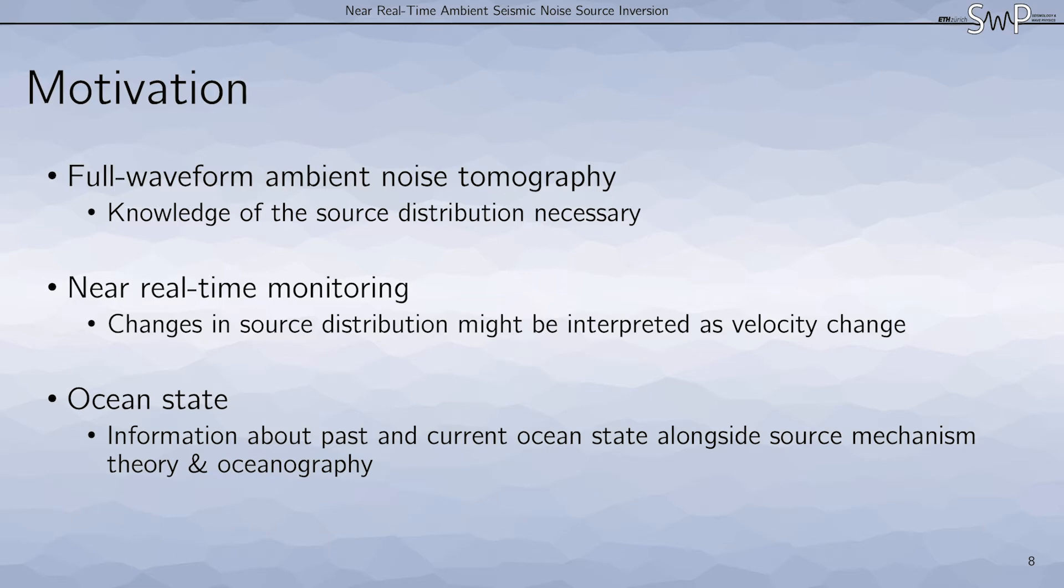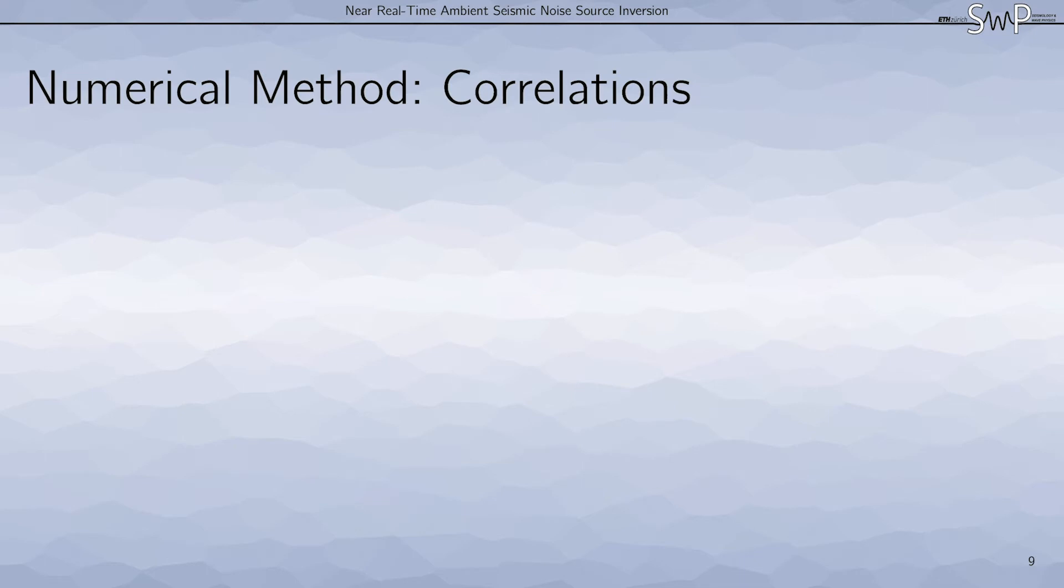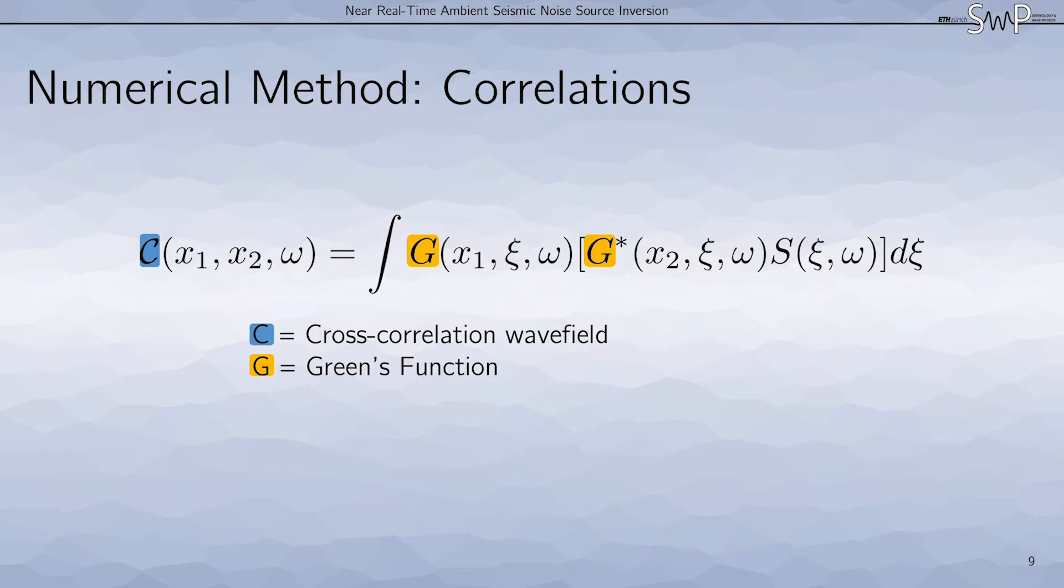Let's continue with the numerical methods. Which equations do we need to perform these inversions? To forward model cross-correlations, we can use this equation here, where C is the cross-correlation wave field, G are the Green's functions for two different stations, and S is the power spectral density of the source distribution.